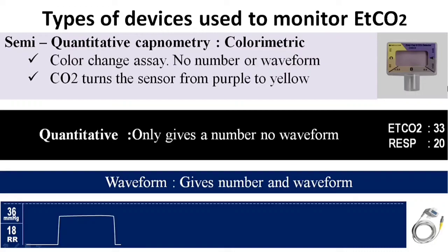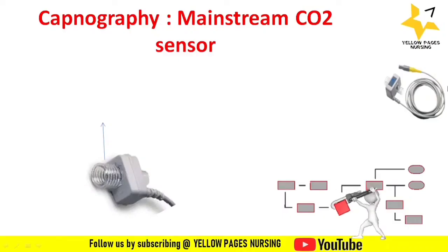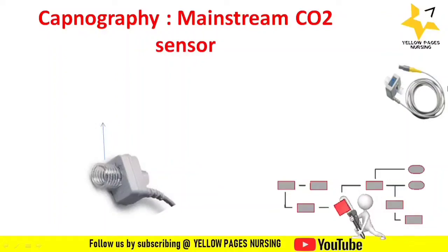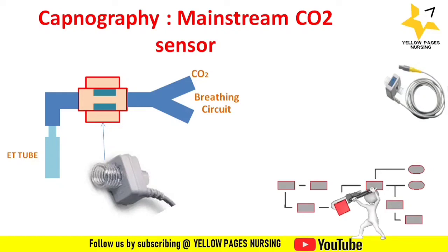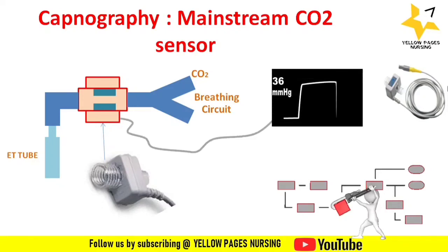Now, the capnography device setup: there are many types of CO2 sensors, including mainstream, sidestream, and microstream CO2 sensors. For the mainstream CO2 sensor setup, the sensor is connected at the terminal end of the ET tube, the breathing circuit is connected at the other end of the sensor, and the cable from the sensor connects to the monitor to display the CO2 waveforms.